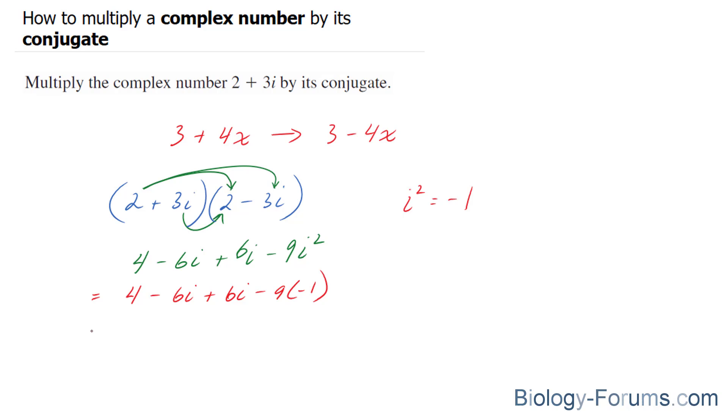In my next step, I'll simplify this expression. 4 minus 6i plus 6i equals 0. And here we have negative 9 times negative 1, which equals plus 9. 4 plus 9 equals 13.